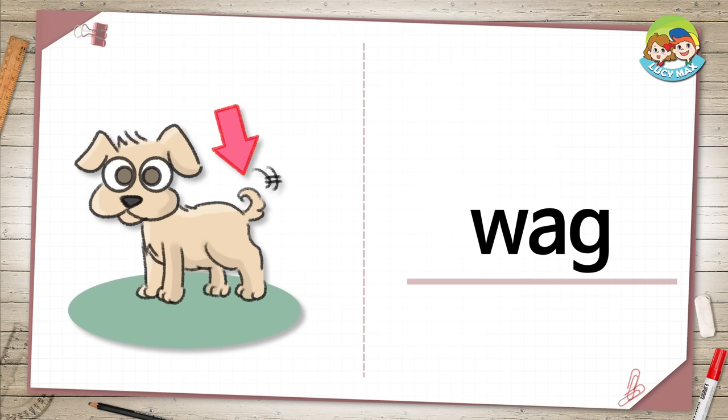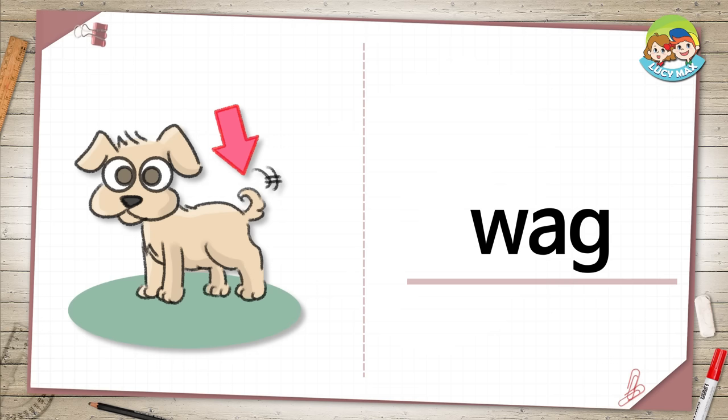Wag. When a tail goes from side to side, it wags. A dog wags its tail when it's happy. What other animal wags its tail?